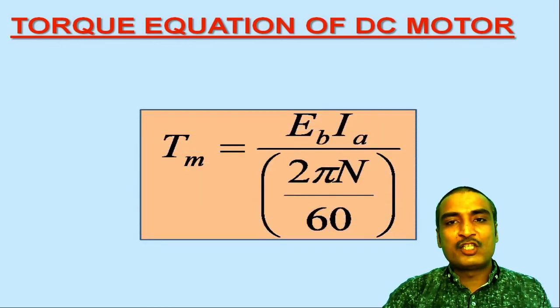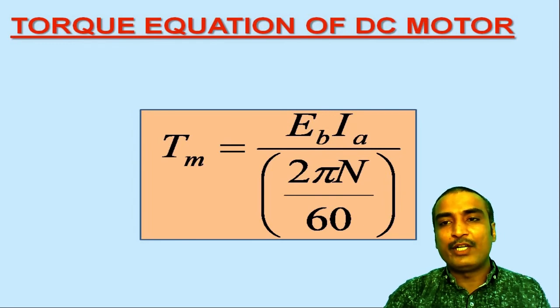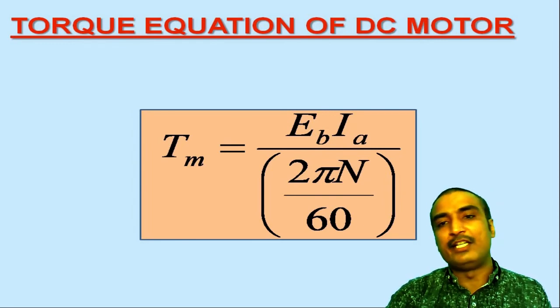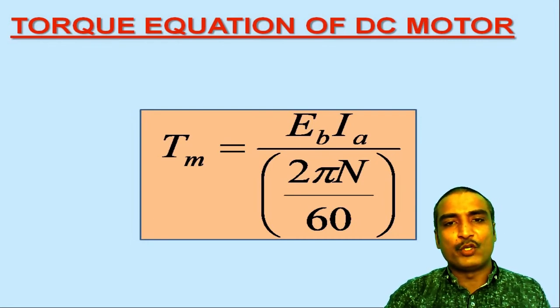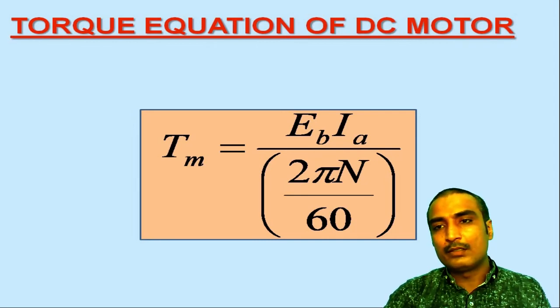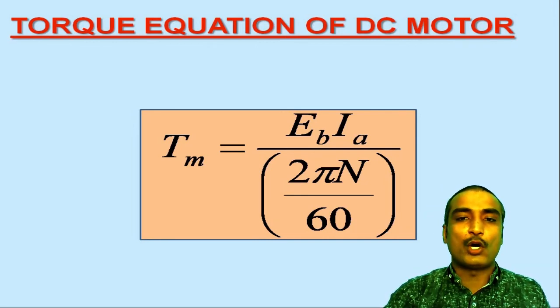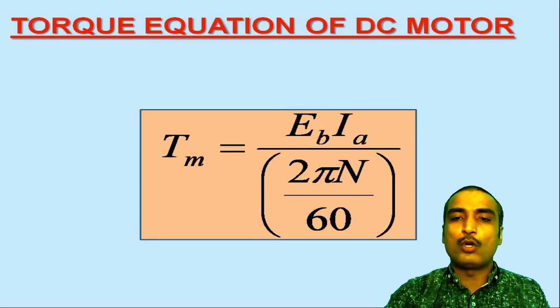This is to remind you that motor action and generator action occur simultaneously in DC machines. When a DC machine operates as a generator, motor action also occurs simultaneously, which results in the production of a counter torque. This concept has been discussed in one of my previous lectures. The expression of torque remains the same whether the DC machine is operating as a motor or as a generator.